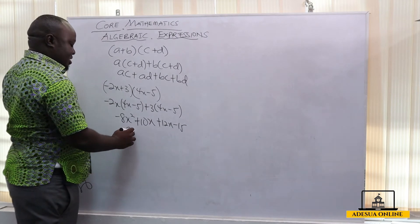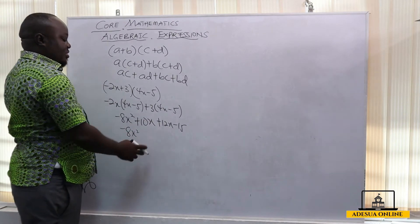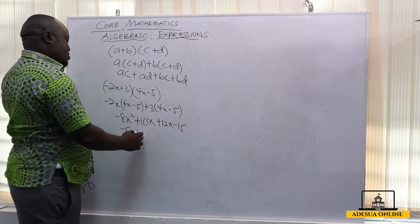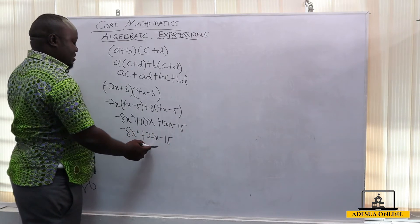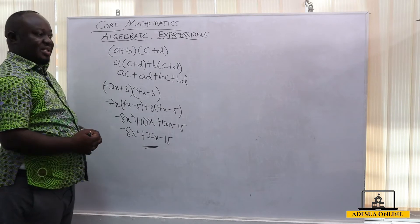So this becomes minus 8x squared. 10x plus 12x is 22x minus 15. So this becomes our answer.